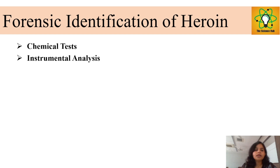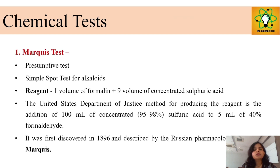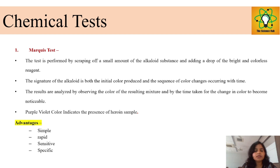For forensic identification of heroin, there are two methods: chemical testing and instrumental analysis. The most common chemical test is the Marquis test, a spot test used for alkaloids. The reagent is one volume of formalin and nine volumes of concentrated H₂SO₄. A small amount of the sample is scraped off and a drop of reagent is added, which changes the color from normal to a purple-violet color, indicating the presence of heroin.